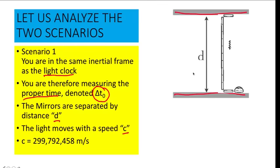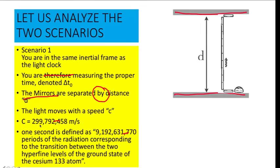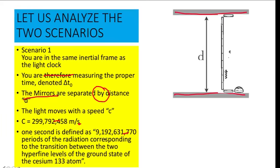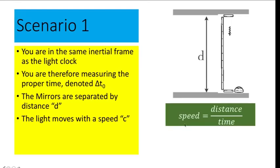Some context about inertial frames: planet Earth is moving around the sun, but despite that movement we don't experience any motion because we are moving at the same speed as the Earth — we are in the same inertial frame. Also, the speed of light is 299,792,458 meters per second. This second is defined as 9,192,631,770 periods of the radiation corresponding to the transition between the two hyperfine levels of the ground state of the cesium-133 atom. In an atomic clock, time is measured as the number of radiation cycles of this element, which is found to be very stable.